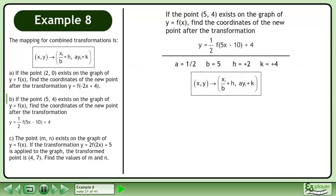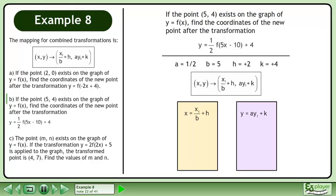Now we'll find the transformed point using a mapping. We can separate the mapping into two distinct equations. Plug in 5 for the initial x value, 5 for the b value, and 2 for the h value. This simplifies to 1 plus 2. Next, plug in 4 for the initial y value, one-half for the a value, and 4 for the k value. This simplifies to 2 plus 4.